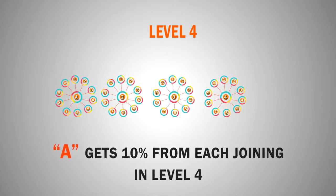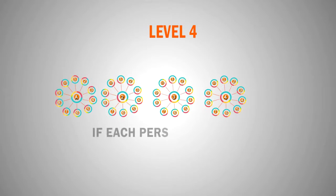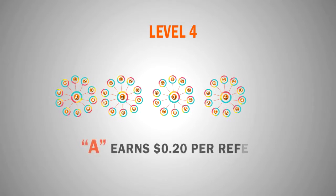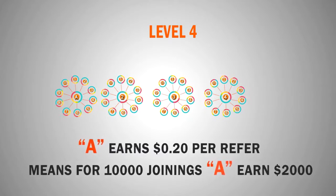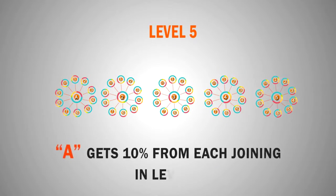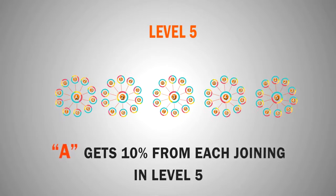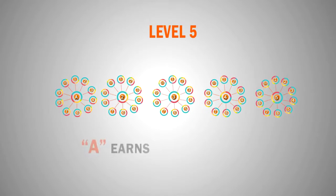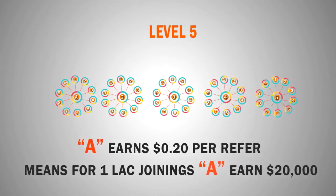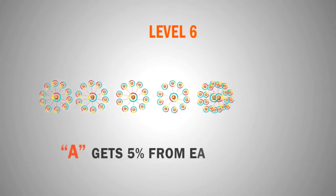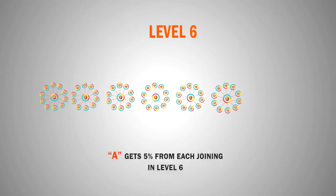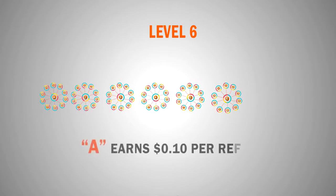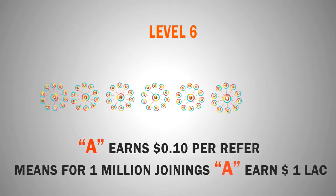At level 4, A is again getting 10% commission. If every person refers 10 friends, there will be 10,000 joinings for A at level 4. A will also earn 10% from level 5 — and if every friend joins 10 friends, then at level 5 there will be 1,000,000 joinings in your network, and you will earn $20,000 from it. At level 6, you receive 5% commission; there will be 1,000,000 joinings at level 6, and you can earn $1,000,000 from level 6.